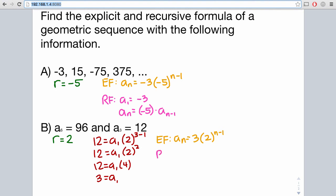And then for the recursive formula, again, two parts: we'll state our first term, which is 3, and then A sub n equals your common ratio, which is 2, times A sub n minus 1. And that's it.